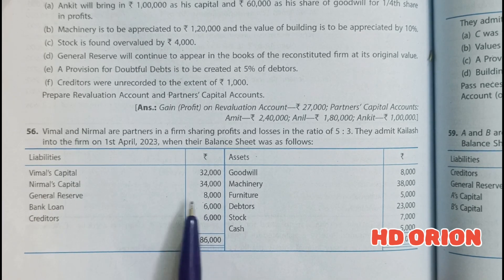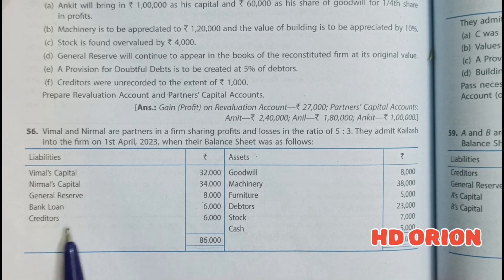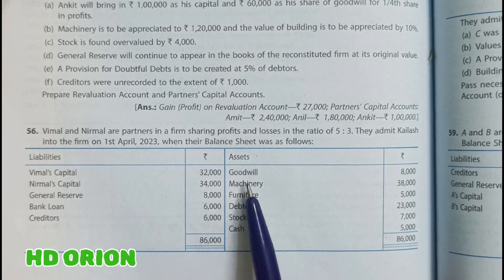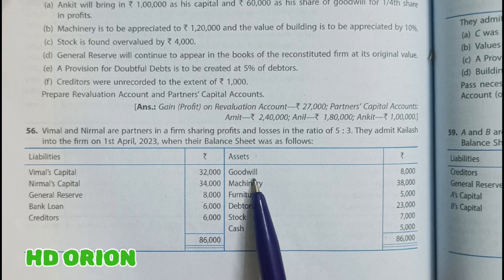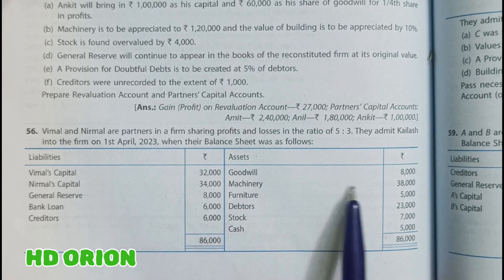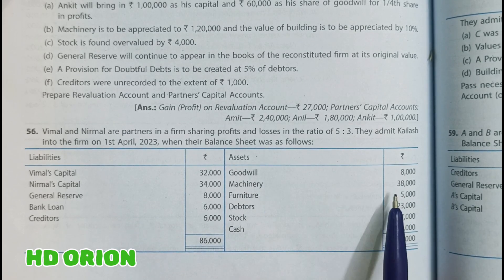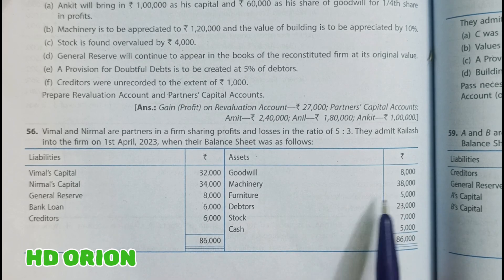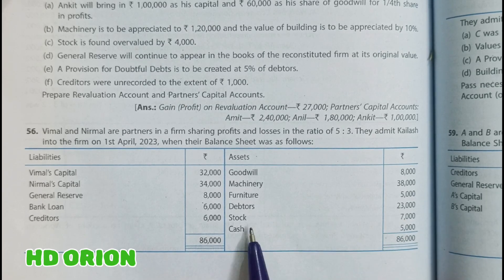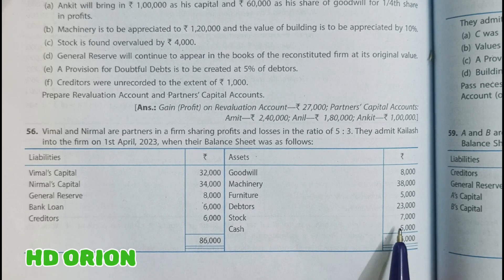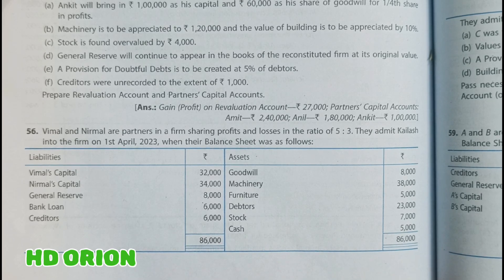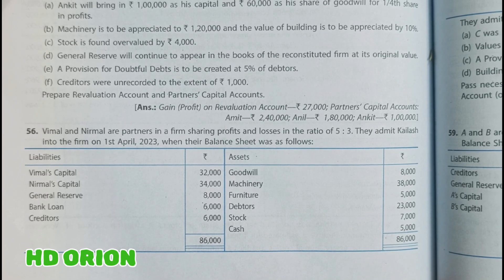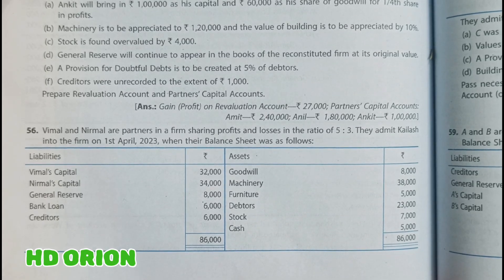The balance sheet also shows general reserve rupees 8,000; bank loan rupees 6,000; creditors rupees 6,000. On the asset side: existing goodwill rupees 8,000; machinery rupees 38,000; furniture rupees 5,000; debtors rupees 23,000; stock rupees 7,000; and cash rupees 5,000. The grand total of the balance sheet is rupees 86,000.